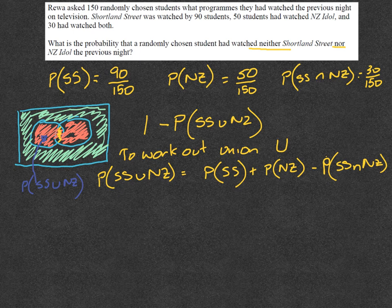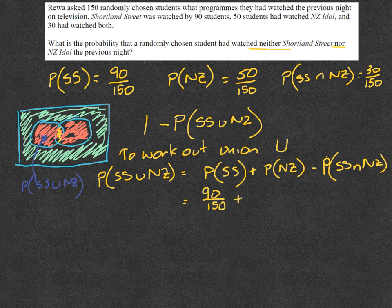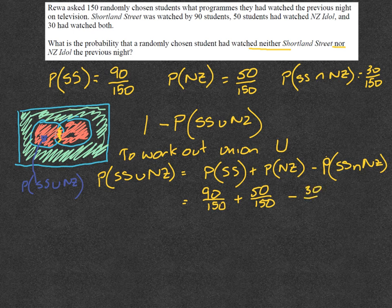And then we will subtract it from one. So let's work out the probability of Shortland Street is 90 over 150, and you can simplify if you want but you don't need to. And then the probability of watching the next one, which is 50 over 150. And then you subtract the intersection from that, and that's 30 over 150.